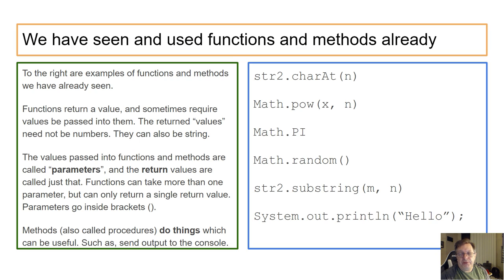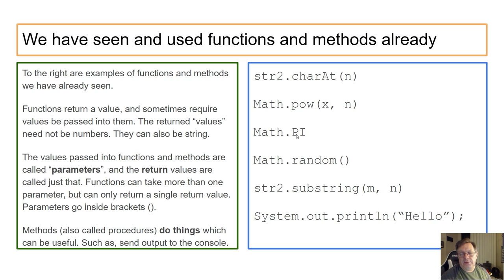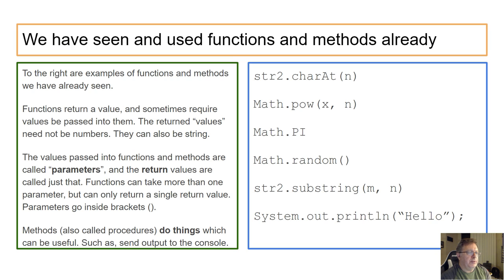charAt returns a value of type char, not type string. Math.pow is simply x to the power n, where x and n can be any numeric data type — integer, float, double, whatever. Math.pi is just a constant; it takes no arguments and has no brackets, so it's not really a function. Math.random has brackets but takes no parameters — it just generates a random number between zero and one.